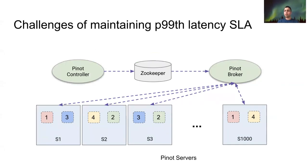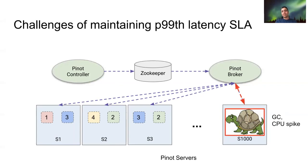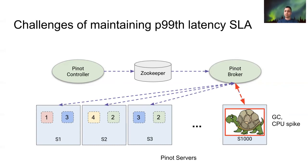With large use cases, you might end up provisioning a lot of Pinot servers — for example, 1000 servers. And every now and then, one of these servers might slow down. This could be because it's undergoing memory pressure, going through garbage collection, or has some intermittent CPU spikes. This ends up lowering the overall latency across the cluster. The more the number of servers, the higher the probability of hitting such a slow server, and thus it might increase your tail-end latencies.